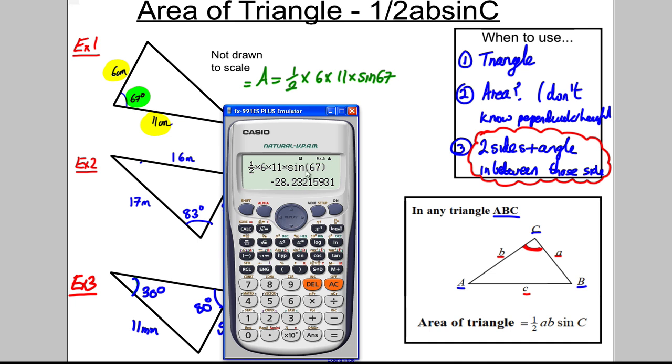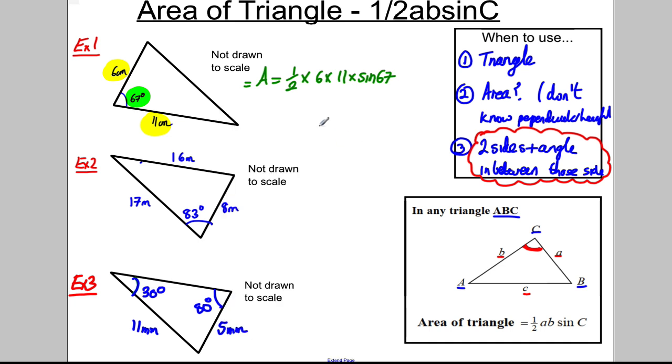On the calculator, type in one half multiplied by 6 multiplied by 11 multiplied by sine 67 and close the brackets. Now I've actually made a mistake here. The calculator must be in degrees mode. That currently says R. Change the mode to degrees - it must say D or DEG, otherwise it's going to make a mistake. If I press equal again, I get 30.37. So the area to one decimal place is 30.4 centimeters squared.